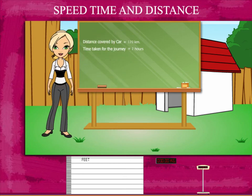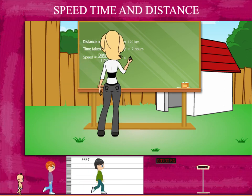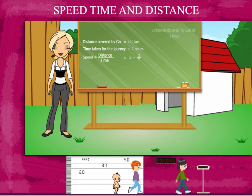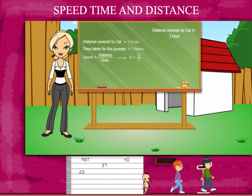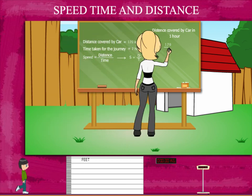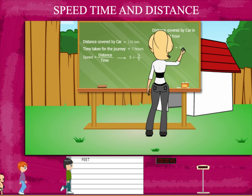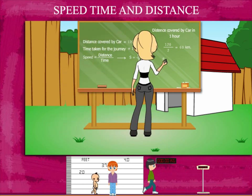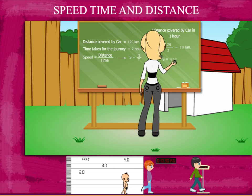So, speed of his car is distance divided by time, or d upon t. Rosie ma'am finds the distance covered in 1 hour, and this is the speed of the car. So, 120 km divided by 2 hours is 60. The speed of Judy's car is 60 km per hour.